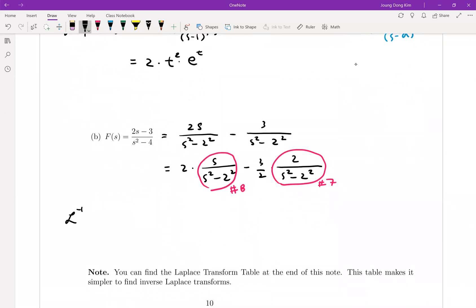Inverse Laplace transform of the given function is equal to 2 times inverse Laplace transform of s over s squared minus 2 squared minus 3 half inverse Laplace transform of 1 over s squared minus 2 squared. Which is equal to 2 times hyperbolic cosine of 2t minus 3 over 2 hyperbolic sine of 2t. That's it.